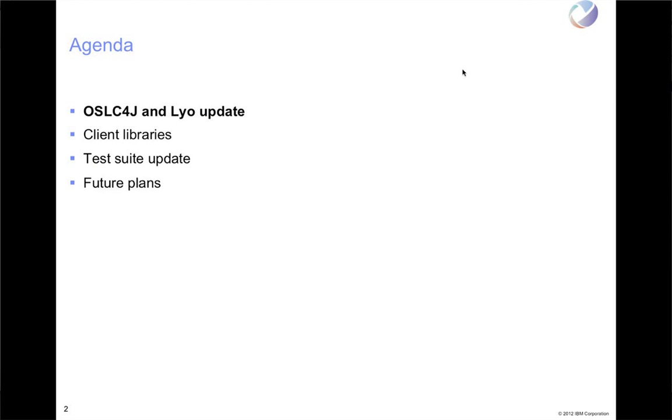Welcome everybody. The agenda for today's call — the main purpose is to provide folks in the community that are interested with an update on Eclipse Leo, specifically on OSLC4J and also a few other selected topics and areas that we've been actively working on in the project.